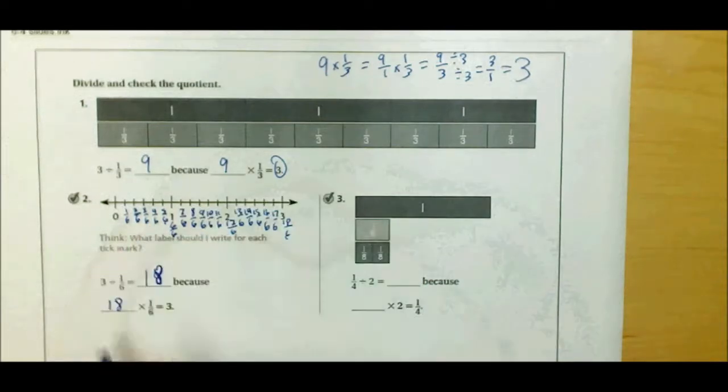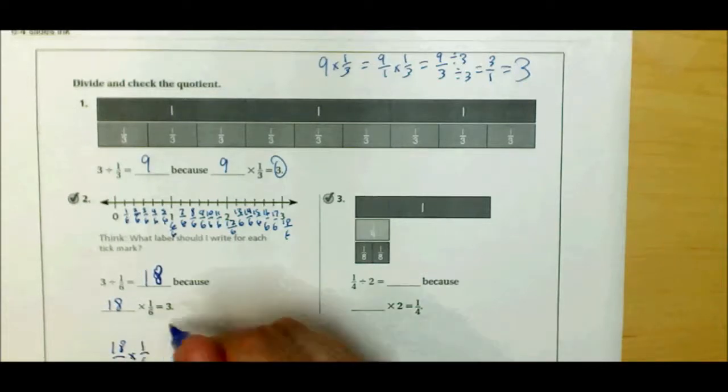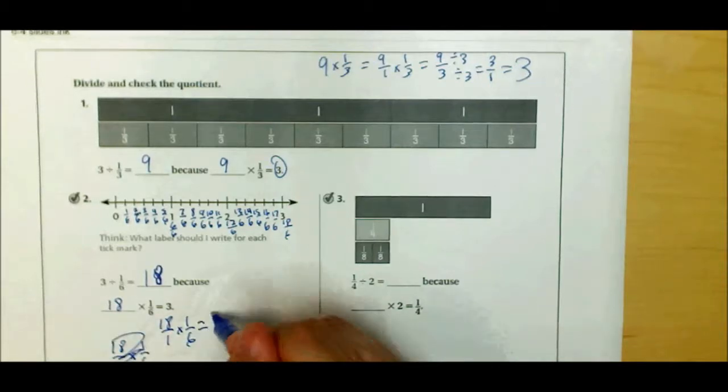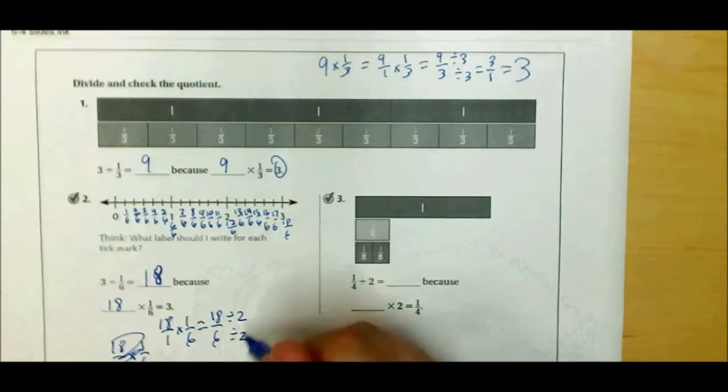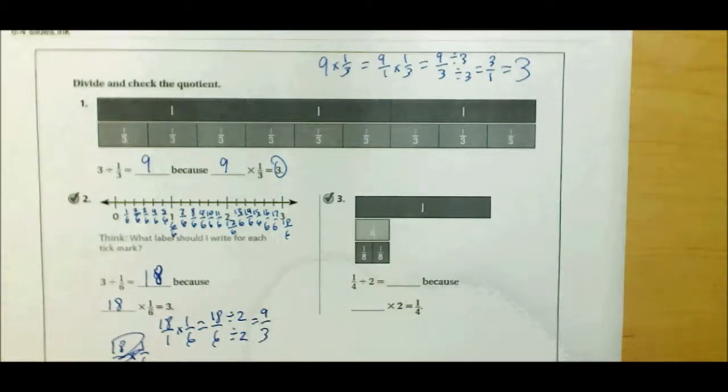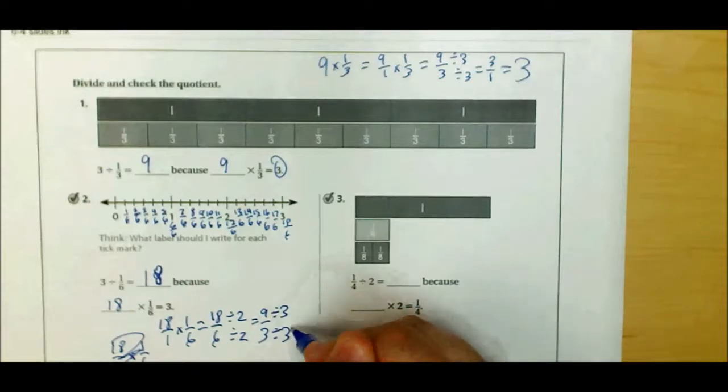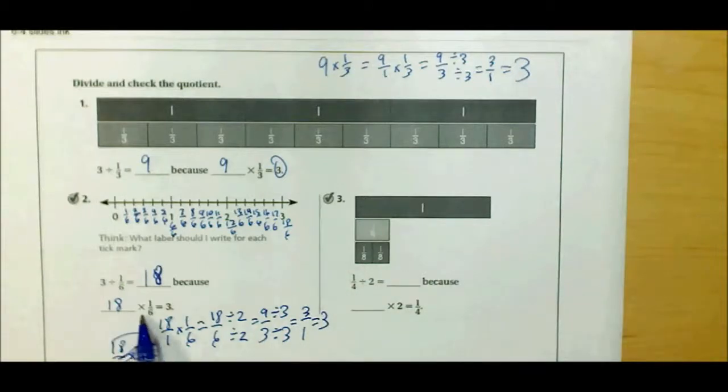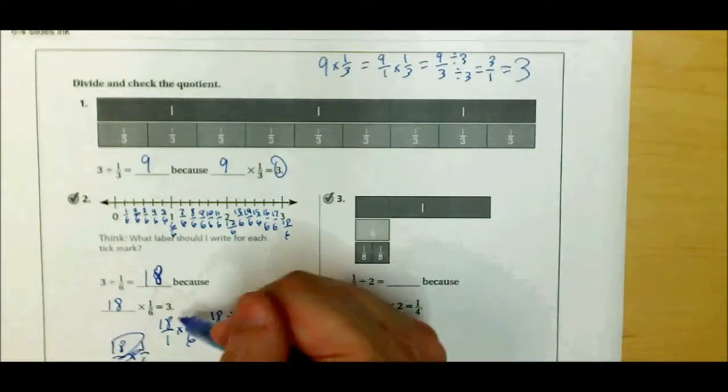And let me check my answer. 18 times 1 sixth, I should get 3. So 18 times 1 sixth is 18 over 1 times 1 over 6, equals 18 over 6. I can simplify that. I divide the top and bottom by 2, I get 9 over 3. I divide the top and bottom by 3, and I get 3 over 1, which is equal to 3. So 18 times 1 over 6 is 3. So this is correct.